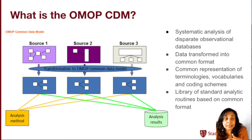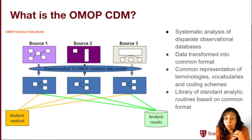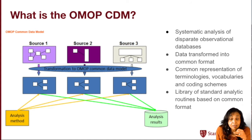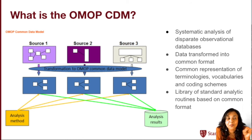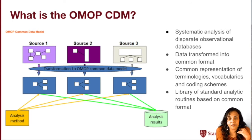The OMOP Common Data Model is founded on three core ideas: a standardized data schema, so all the databases look similar; standardized vocabulary, so they are all speaking the same language and terminology definitions mean the same thing; and standardized analysis methods.